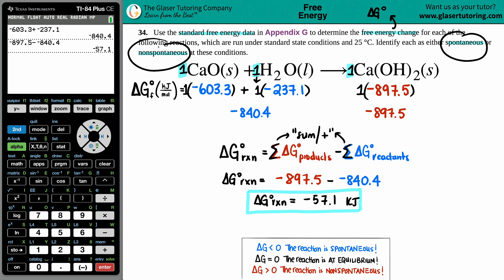Okay, one answer done. Delta G, the free energy change, is -57.1 kilojoules. Now from here, is that spontaneous or is that non-spontaneous?